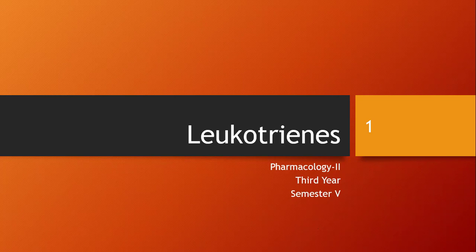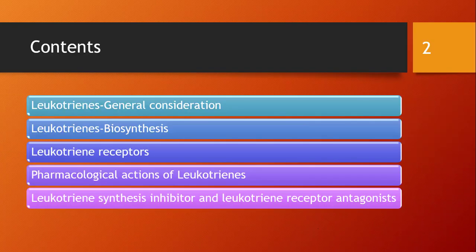Let's continue with our next topic — leukotrienes. Leukotrienes are a lipid type of autacoid, just like prostaglandins, and they are obtained via the lipoxygenase pathway. Leukotrienes, just like prostaglandins, play a role in inflammation.